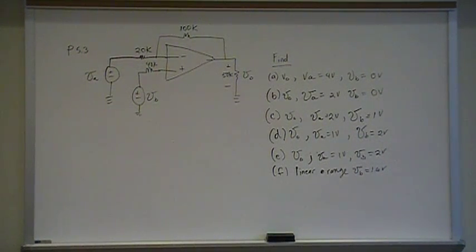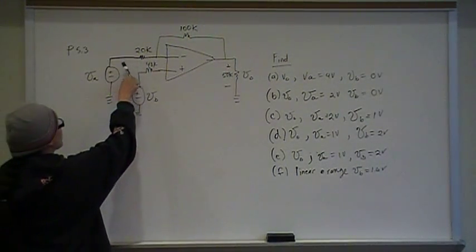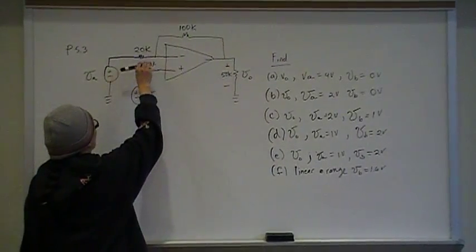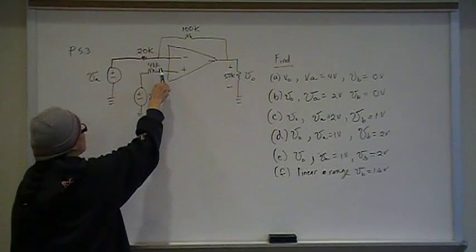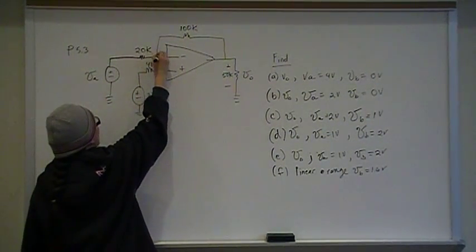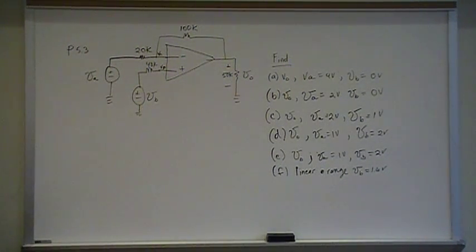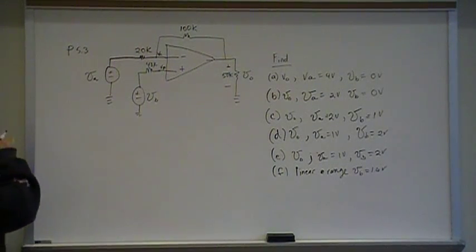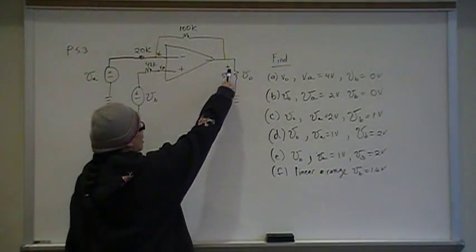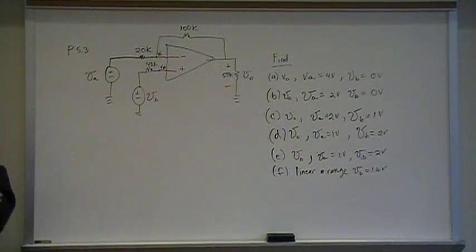Okay, so this is problem 3 from chapter 5, the section on terminal automatic terminal currents and voltages. In this problem we have a circuit with some voltage VA connected to 20 kilo ohms at the VN terminal, and at the VP terminal we are connected to some voltage source VB and a 40 kilo ohm resistor. Feedback resistor is 100k and Vout is connected to the voltage drop across a 50k resistor. We're going to find Vout for different values of VA and VB, and then for part F we will be looking for the linear range if VB is 1.6 volts.